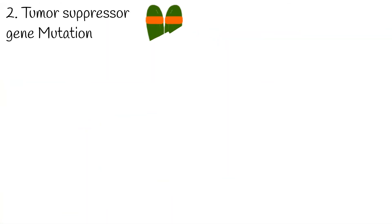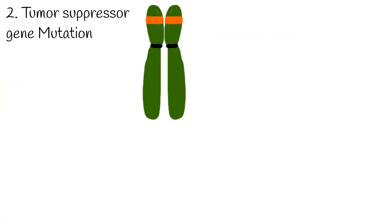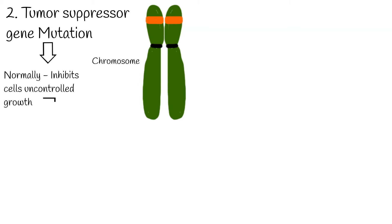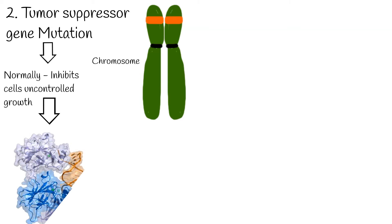Two: mutation of the genes which inhibit cells' uncontrolled growth, called tumor suppressor genes. In contrast with proto-oncogenes, where their overexpression, activation, and amplification causes cancer, in the case of tumor suppressor genes, they should be inactivated — they should lose their function — to cause cancer.